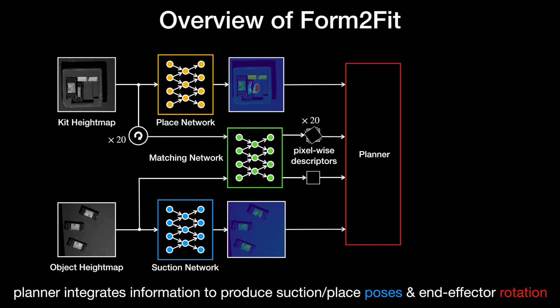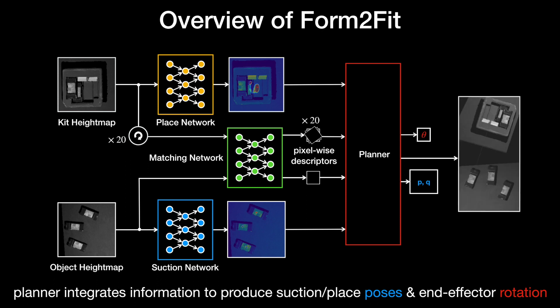Finally, the planner is responsible for integrating information from all three modules and producing the final assembly parameters. Specifically, top pick candidates are sampled from the suction heat map and top place candidates are sampled across all 20 rotations of the place heat map.